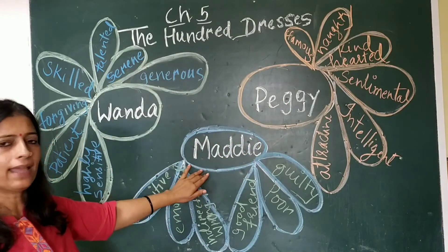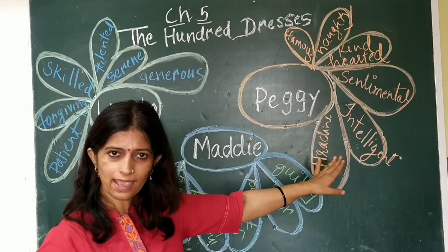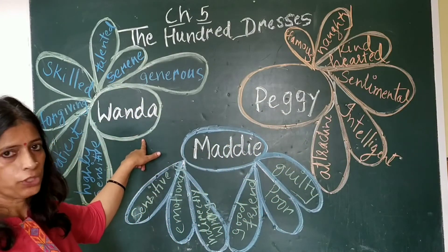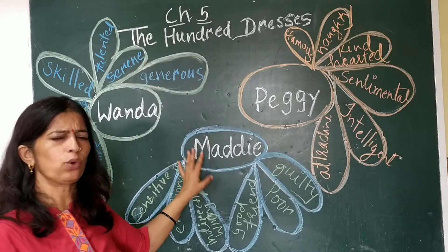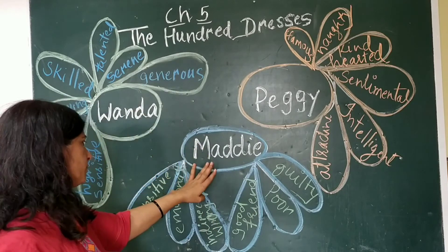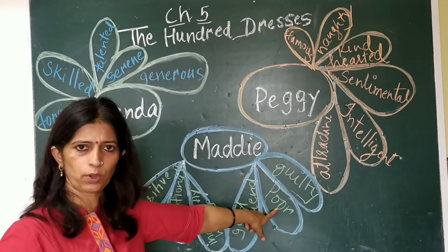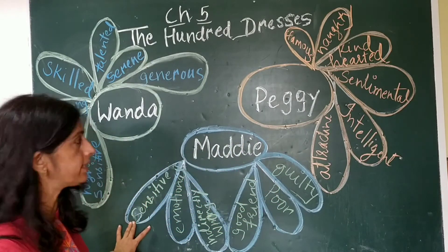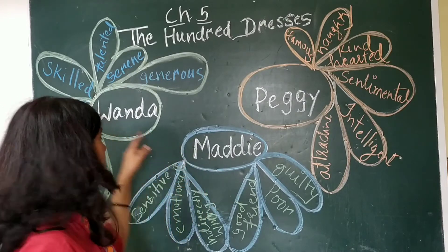Now we come to the third character — Maddie. Maddie was a friend of Peggy. But she was as poor as Wanda. She was not from a rich family, though not to the same extreme. She was a poor girl. And she was a highly sensitive girl, also sensitive like Wanda.